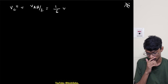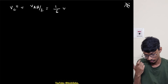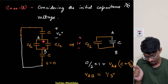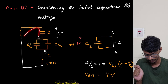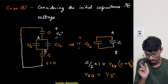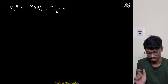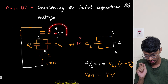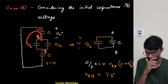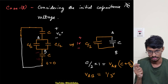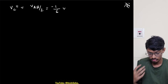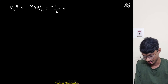One thing to observe is the polarity of Vc. The initial charge is plus-minus oriented such that it divides as plus-minus and plus-minus. Because of this polarity, the contribution Vc'' will be minus 1/6. This plus-minus orientation is critical to note when applying superposition.